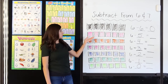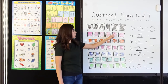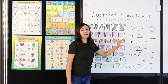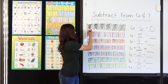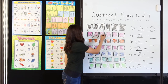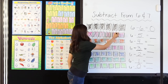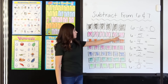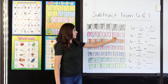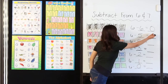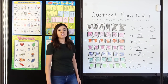Here I have 6 pink squares — 1, 2, 3, 4, 5, 6. Let's go ahead and cross off the 5 that we are taking away: 1, 2, 3, 4, 5. How many do I have left? 1. 6 minus 5 equals 1. Good job.